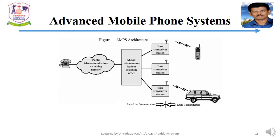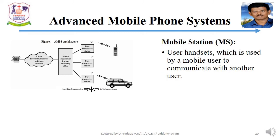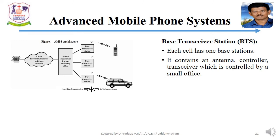This is the architecture of AMPS. There are three basic devices: mobile station, base transceiver station, and Mobile Telephone Switching Office (MTSO). The mobile station is the user handset used by a mobile user to communicate with another user. The Base Transceiver Station (BTS) — each cell has one base station, and it contains an antenna, controller, and transceiver, which is controlled by a small office.